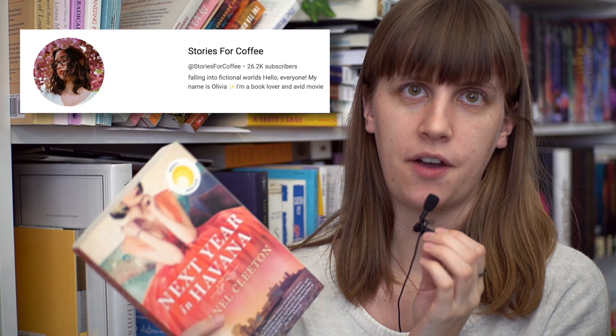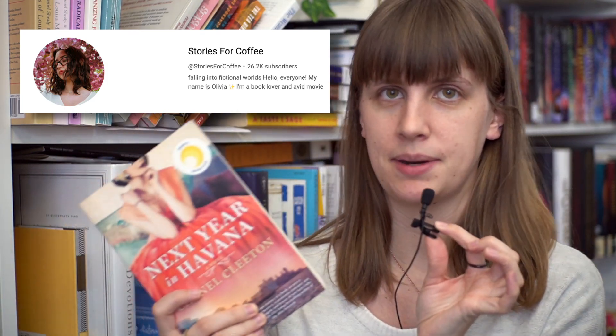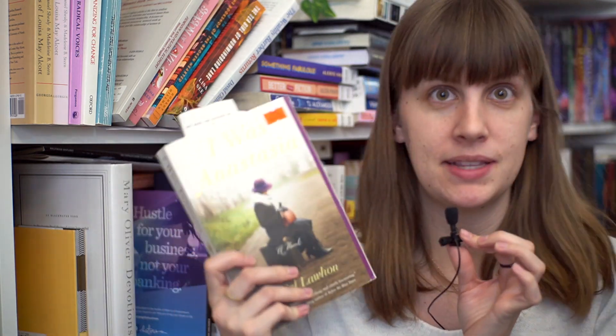Next Year in Havana by Chanel Cleeton. This I keep seeing on Stories for Coffees YouTube and Instagram and everything. She loves Chanel Cleeton and this is a historical fiction set in Cuba split between the 50s and 2017 so I think it'd be really cool to read a book set in Cuba. Okay, I said I was obsessed with Anastasia. This one is I Was Anastasia by Ariel Laughan. It's a novel about Anna Anderson who claimed that she was Anastasia. Turns out it was not but maybe in this one she is. I don't know. Found in a little free library.